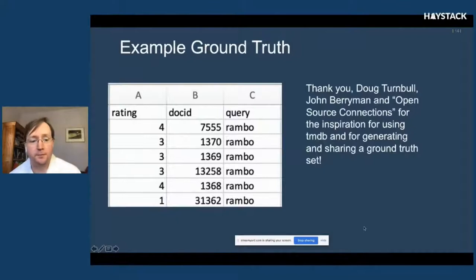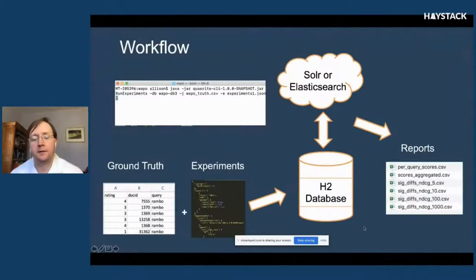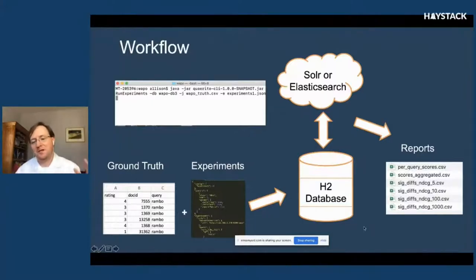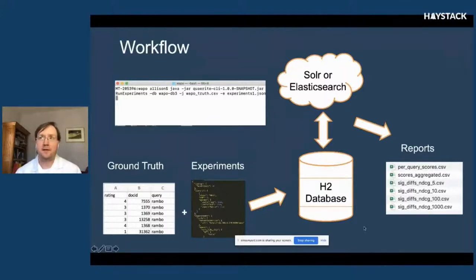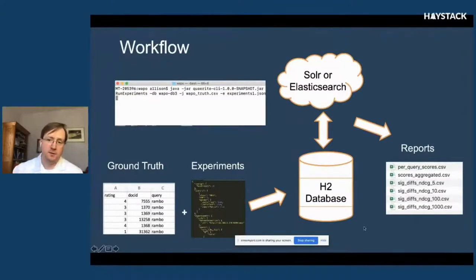Ground truth typically looks like a relevance ranking, a doc ID, and a query. Quiŕita — which is Latin, a plural imperative meaning 'seek' — is the notion of searching in the parameter space for what sets of parameters and combinations of technologies can help lead to improved results. The workflow starts with a command line and a ground truth file, experiments pumped into an H2 database, then launches those queries against Solr or Elasticsearch, and outputs a directory of reports.